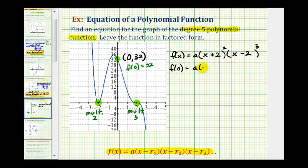So we would have a times, if x is zero, this should be two to the second, and if x is zero here, we'd have negative two to the third, and this must equal positive thirty-two.